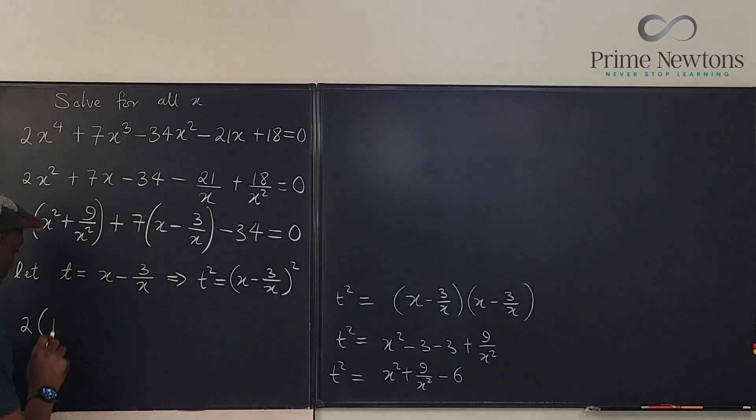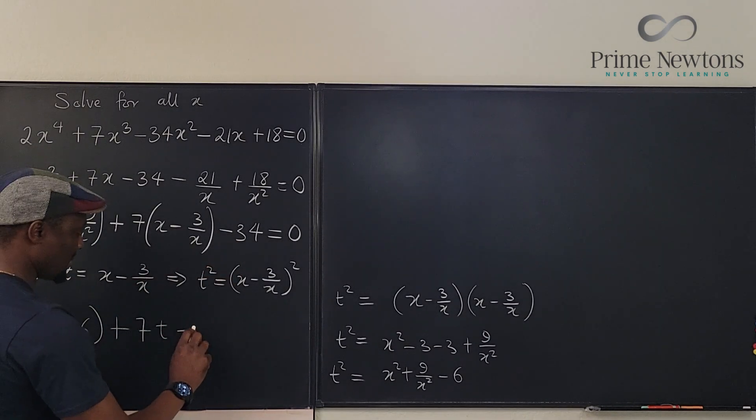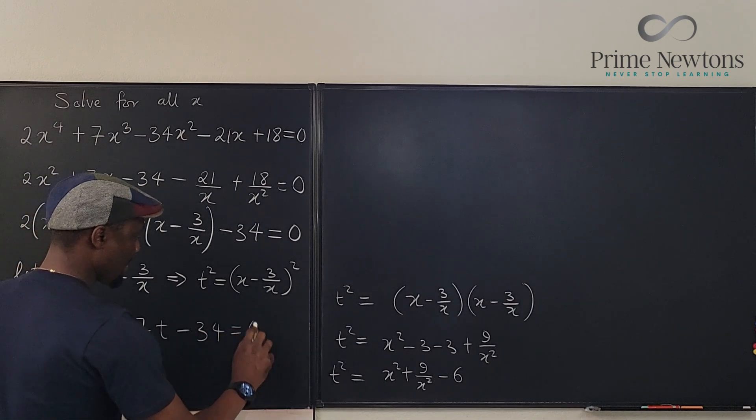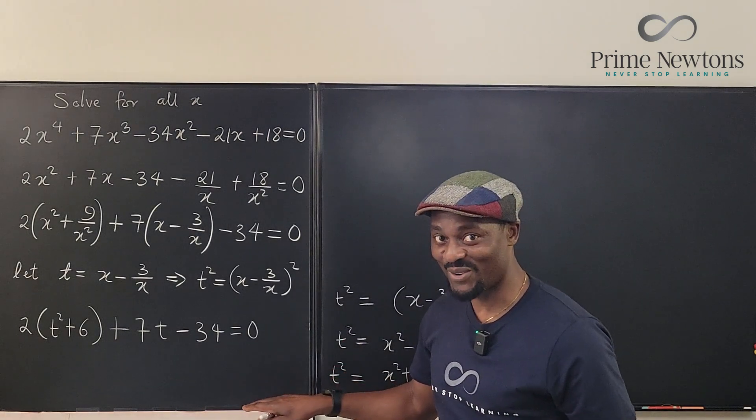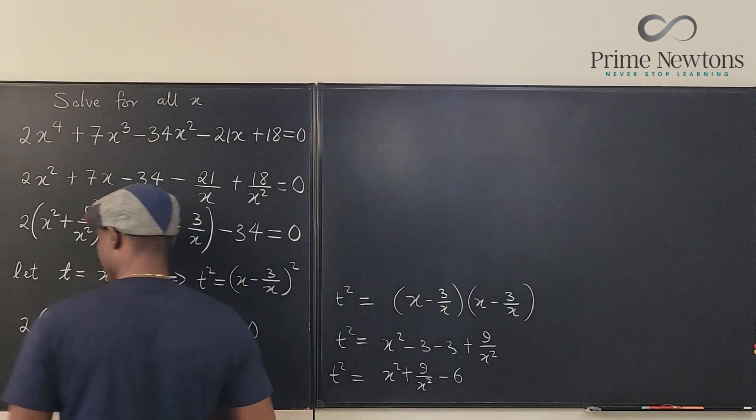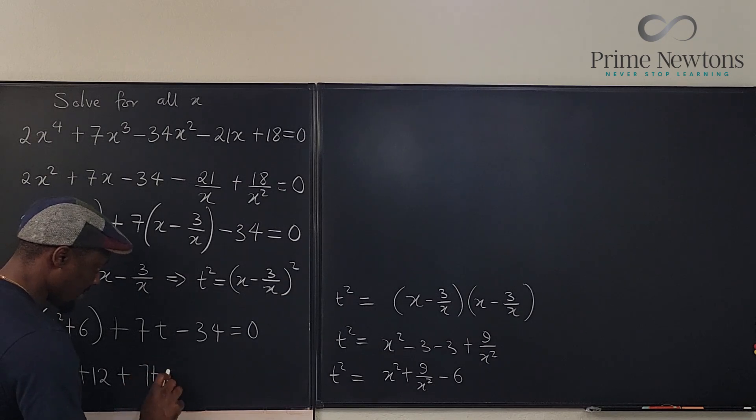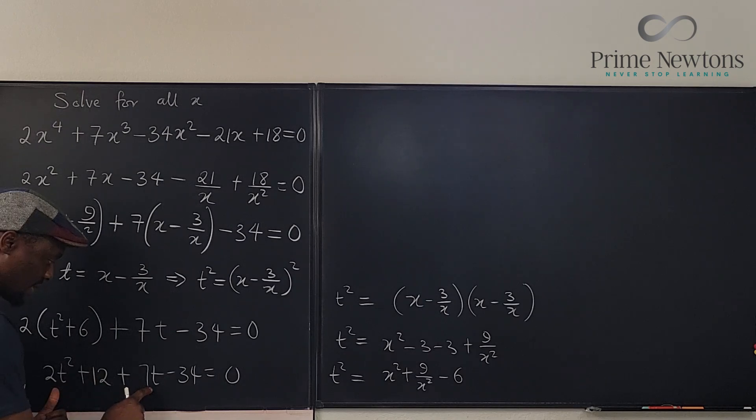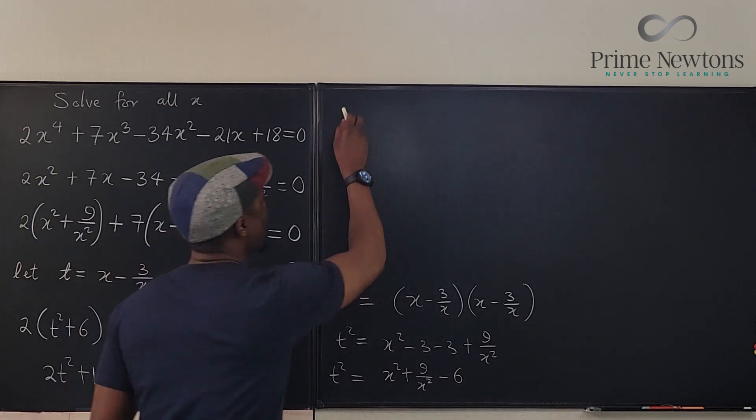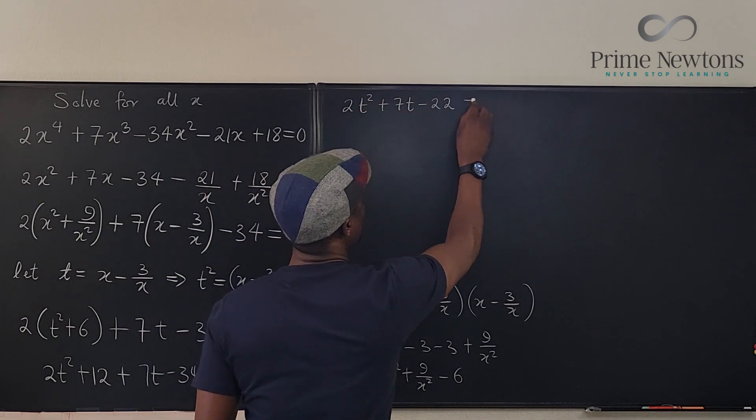So we can go here and say 2 times t² plus 6, plus 7 times t, minus 34 equals zero. All the x's have disappeared. We now have a simple quadratic that we can solve. If you distribute this, what do we get? We get 2t² plus 12 plus 7t minus 34 equals zero. So we have 2t² plus 7t minus 22 equals zero.